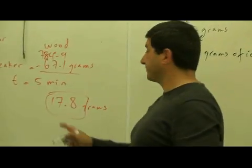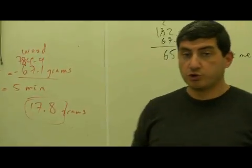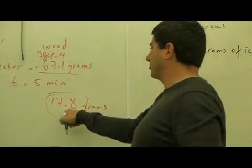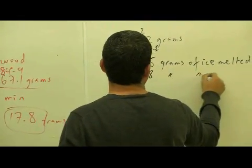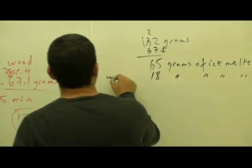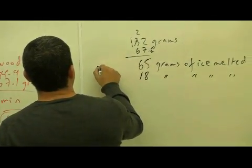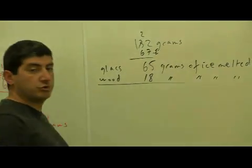Now through the wood, about 18 grams of ice was melted. So wood versus glass. If I take the ratio of the two, it's roughly about what? If I divide 65 by 18, about 4, right? 3 to 4.